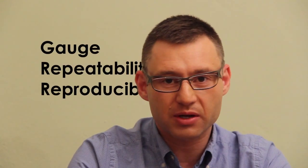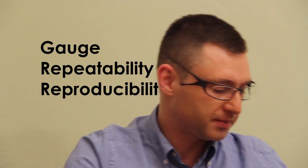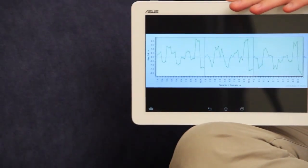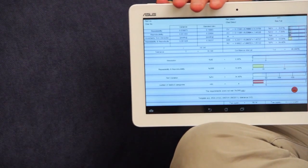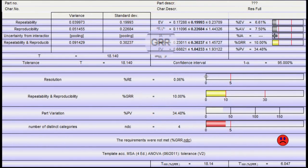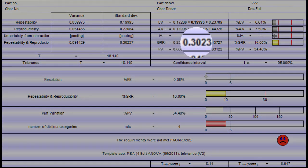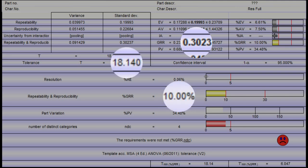Let's see for example the gauge R&R. Here is data presented in the MSA, the measurement system analysis manual. The total gauge R&R is a little over 0.3 which makes the measuring device acceptable at 10% gauge R&R for a tolerance of 18.14.